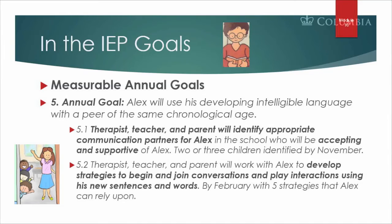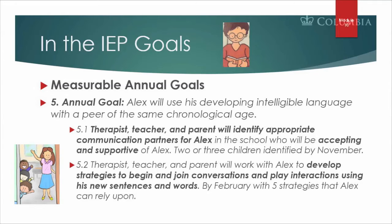His final goal is to use his developing intelligible language with a peer of the same chronological age. It will be important for the teacher and parent to identify one to two appropriate communication partners for Alex in his school who will be accepting and supportive of him. We want him to develop peer relationships with the trust he has with his mom and his dad, so he is willing to make mistakes and willing not to be understood.